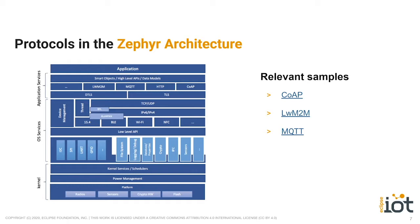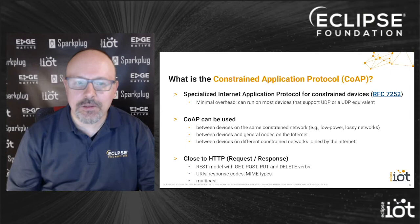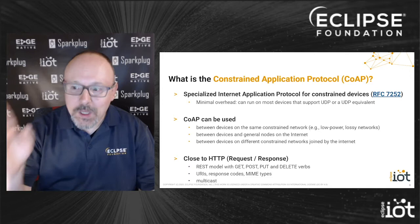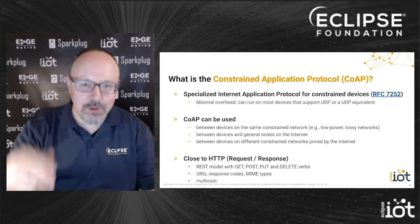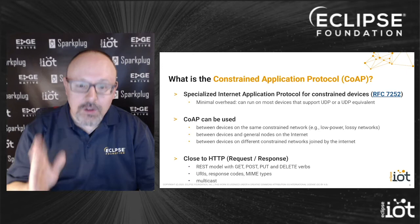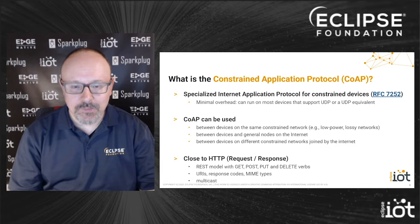So what is the Constrained Application Protocol, or CoAP? CoAP is a protocol engineered from the ground up to target constrained devices. It's managed by the Internet Engineering Task Force (IETF) and documented in a specific RFC, with additional RFCs providing extra features on top of that. The obsession of CoAP's designers was to have minimal overhead. CoAP can run on most devices that support UDP, or protocols with roughly equivalent resource usage.